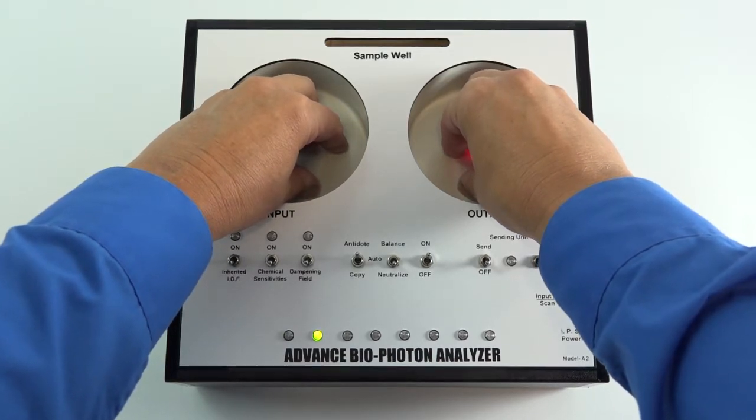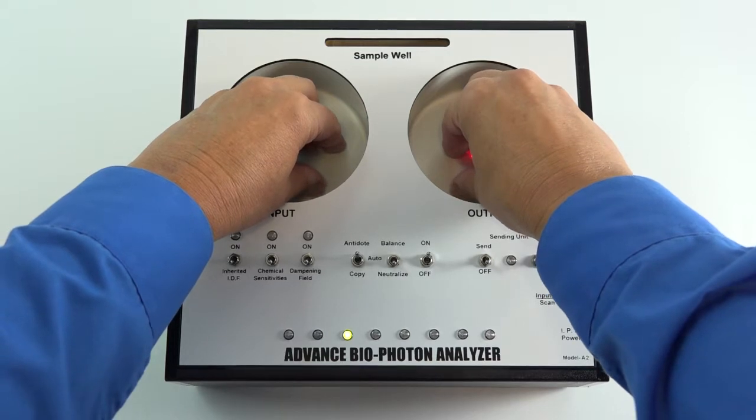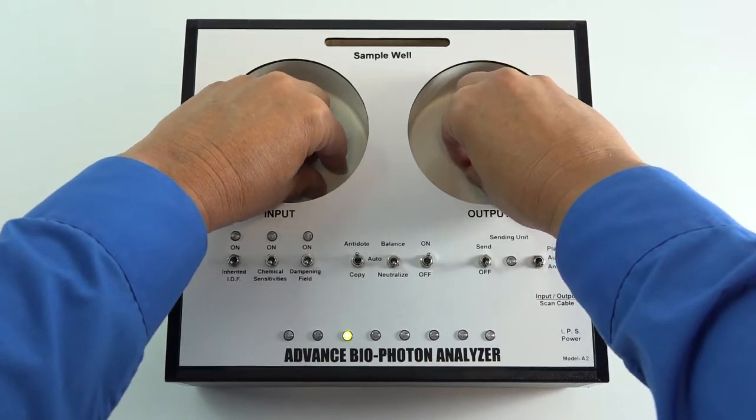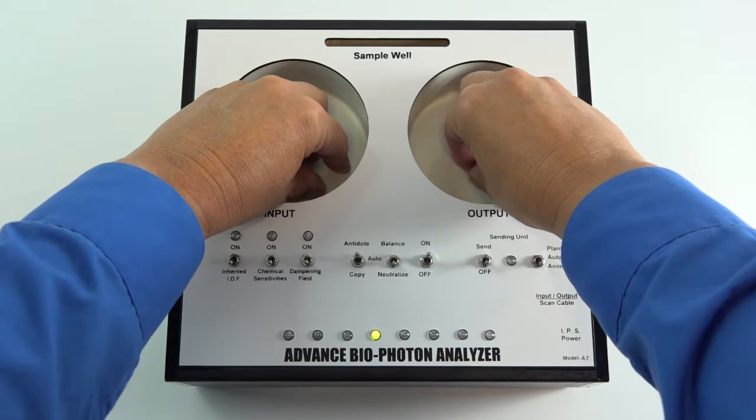The ABPA will run through a 40-second sequence where the biophotonic energy of the body is analyzed from the left hand in the input well.